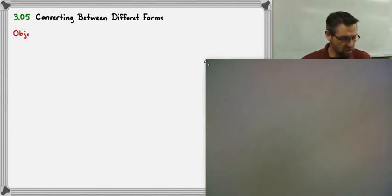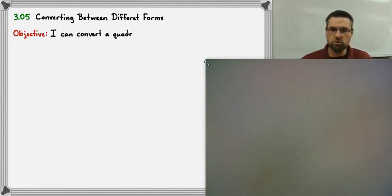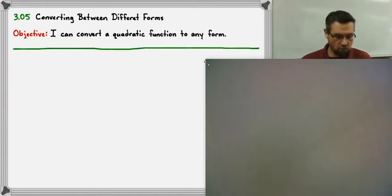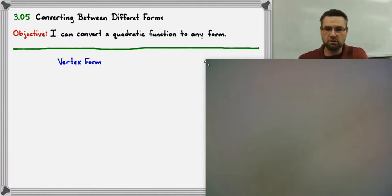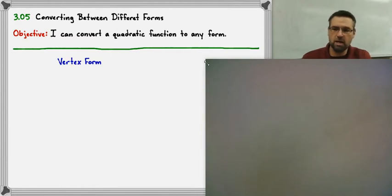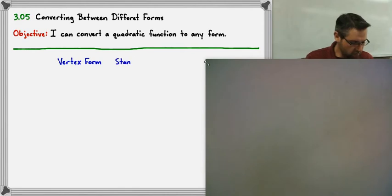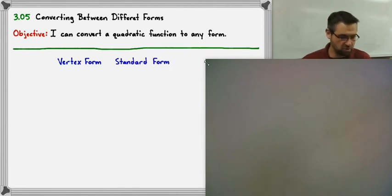Your objective today is to be able to convert any quadratic function to any other form. So if I give it to you in vertex form, you should be able to convert it to standard form and to factored form. If I gave it to you in standard form, you should be able to convert it to vertex and factored form. And if I give it to you in factored form, you should convert it to standard form and vertex form — so any form to any other form.